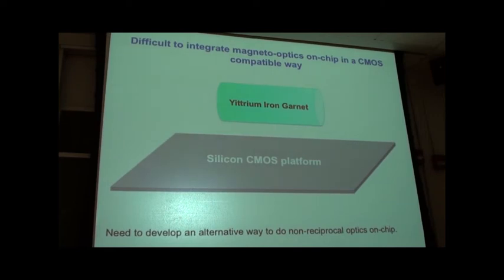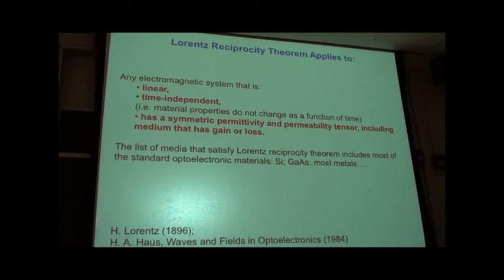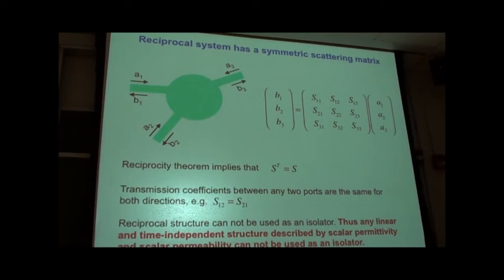To do non-reciprocal optics, it is useful to briefly review the Lorentz reciprocity theorem, which underlies this. This is a theorem that applies to a very wide variety of electromagnetic materials, as long as they are linear, time-independent (meaning their properties do not change as a function of time), and also have a symmetric permittivity and permeability tensor — and that includes mediums that have gain and loss. As a result, the list of media satisfying Lorentz reciprocity includes most standard optoelectronic materials.